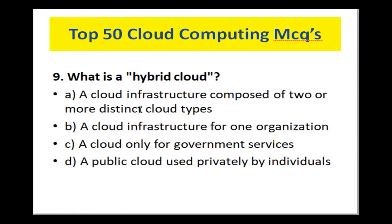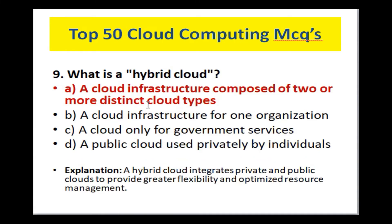What is hybrid cloud? Options are: a cloud infrastructure composed of two or more distinct cloud types, a cloud infrastructure for one organization, a cloud only for government services, a public cloud used privately by individuals. The correct answer is a cloud infrastructure composed of two or more distinct cloud types. In cloud computing, the hybrid cloud represents a combination of public and private cloud.